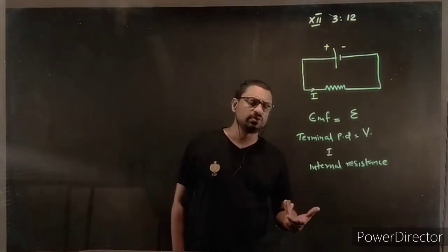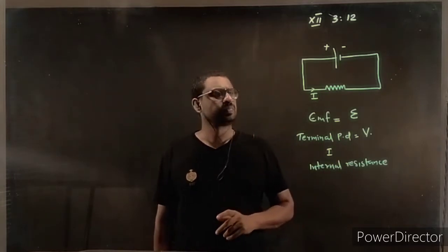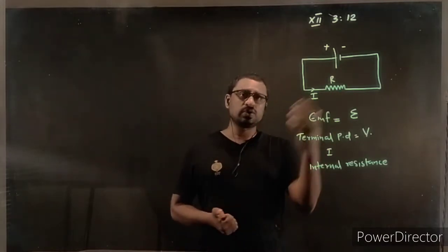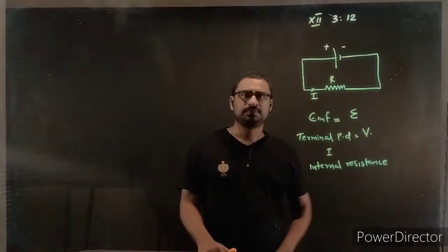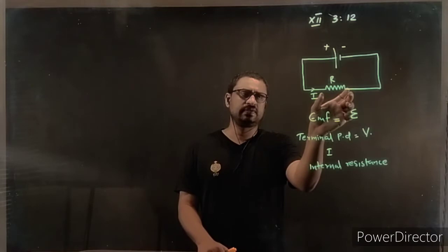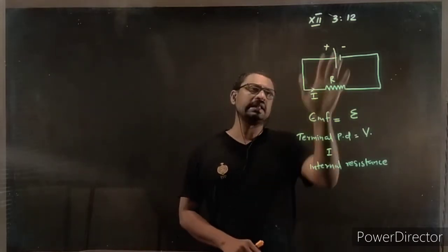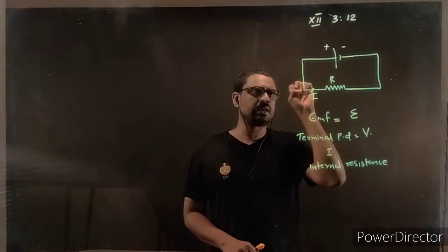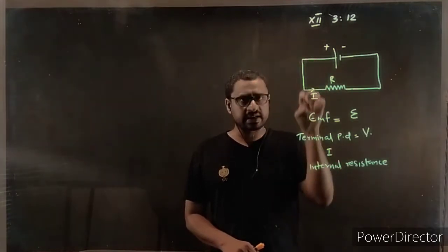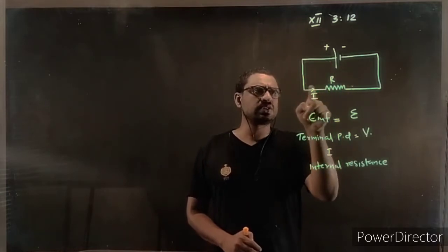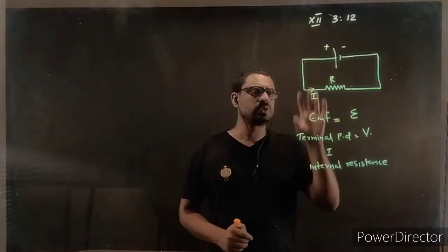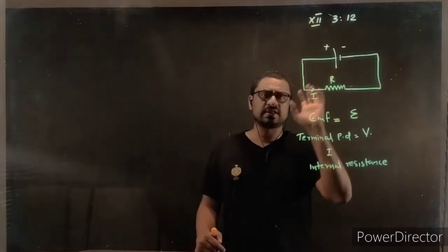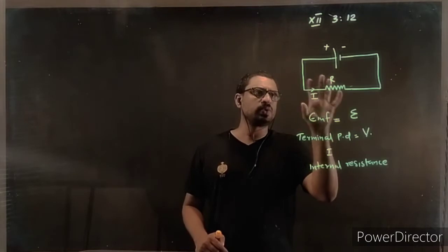First of all, I will explain what internal resistance is. There is an external resistor R. Resistance is the opposition offered when current flows through the conductor. When we draw a resistor, it means the entire opposition is concentrated there — the resistance of the conductor and the resistance of the connecting wire, everything is concentrated in the external resistance R. There is no opposition along the connecting wire itself.